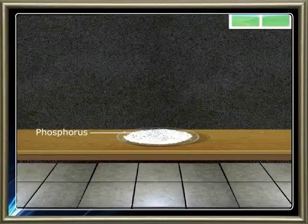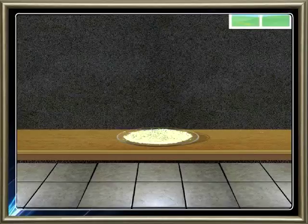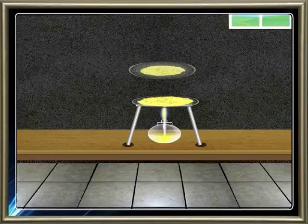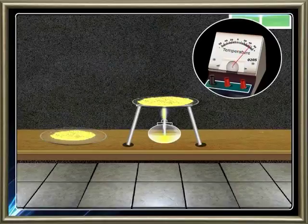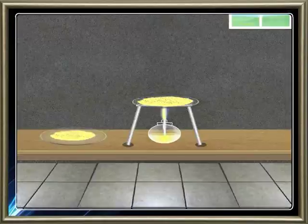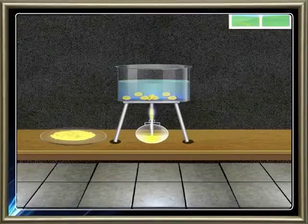Phosphorus is a waxy, colorless solid. It turns yellow on standing. The melting point of phosphorus is 44 degrees Celsius. It is very reactive and we keep white phosphorus stored under water.